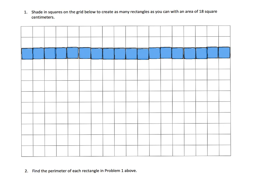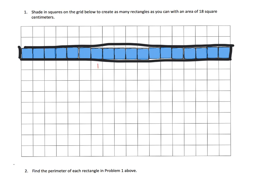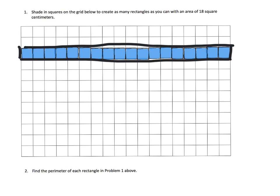Parents and teachers, we don't need everything to be perfect. What we see is that this rectangle is 18 centimeters across and 1 centimeter tall on each side. To find the perimeter, we add the bottom plus one side: 18 plus 1 is 19, then times 2, because we have opposite sides. 19 times 2 is 38, so the perimeter is 38 centimeters.